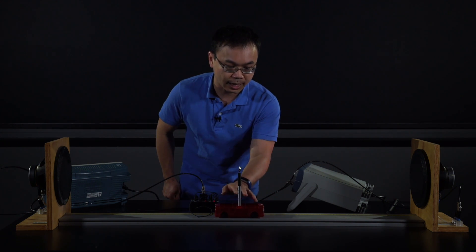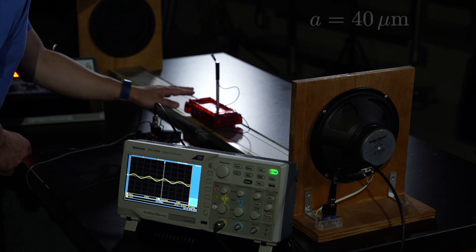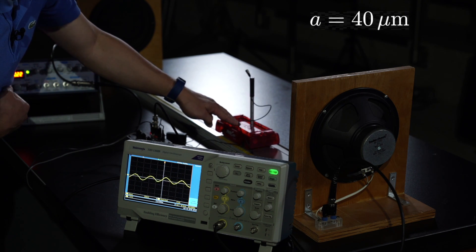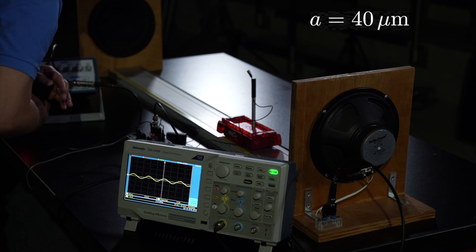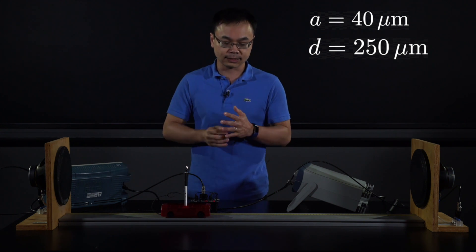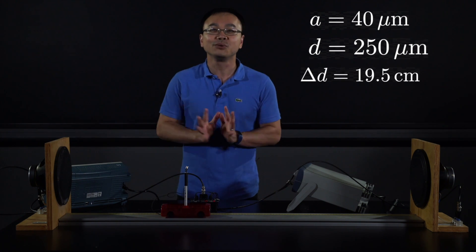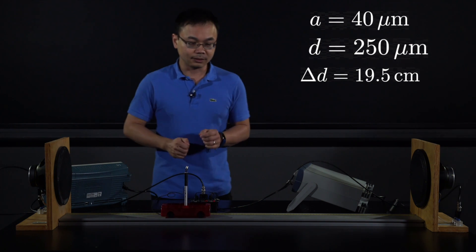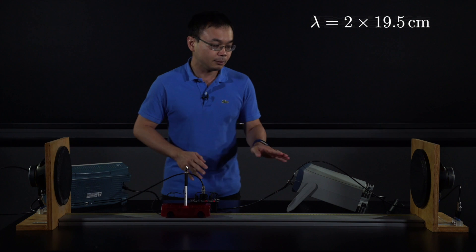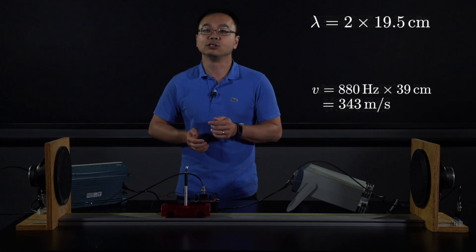In the middle, the reading on the ruler is 53.5 centimeters. Moving the car to the next minimum — the second node — the reading on the track is 73 centimeters. The difference, which is the distance the car has traveled, is 19.5 centimeters. This gives us all the ingredients for calculating the speed of sound: 19.5 centimeters multiplied by 2 gives the wavelength of the sound wave. Multiplying that by 80 hertz gives approximately 343 meters per second.